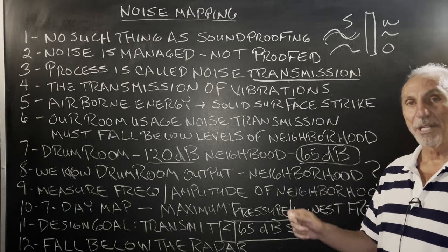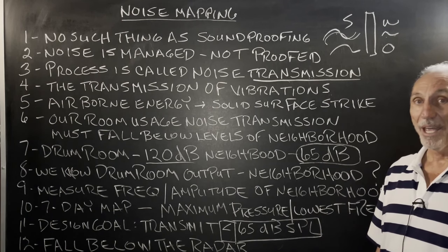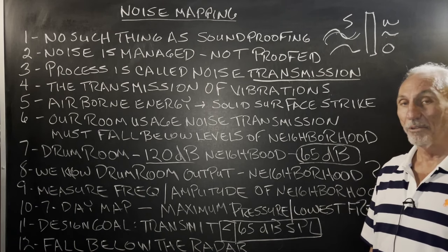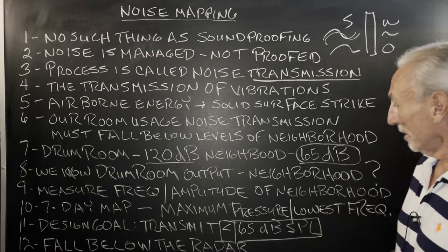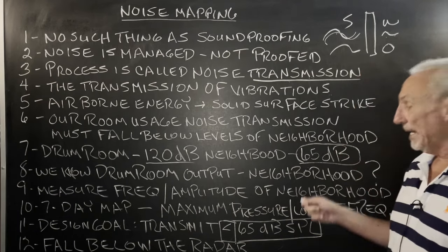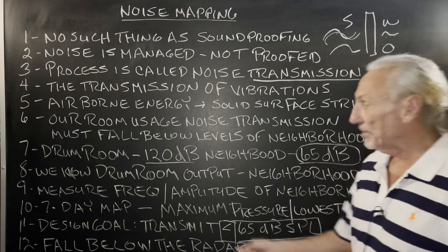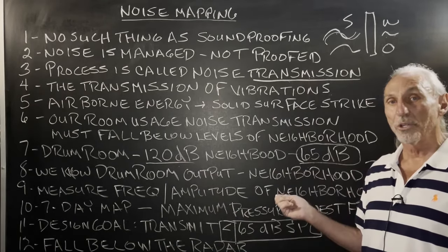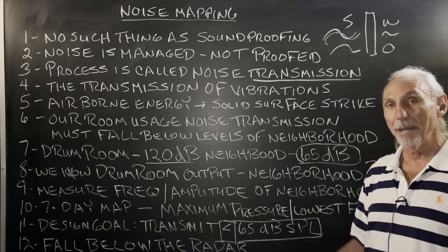Most of those people telling you how to keep a room quiet have never built a room in their life. And if they say they have, have them call me — I'll know after two questions. So we have to manage this noise. How do we know how to manage it? We have to measure the noise in the neighborhood. We already know what the drum room is going to do. What we don't know is where that noise is going to go and what the frequency and amplitude of the neighborhood is — that's called the ambient noise level.